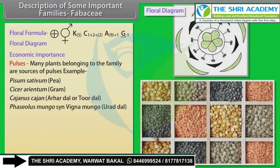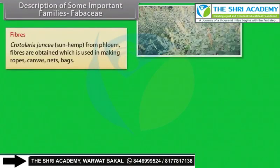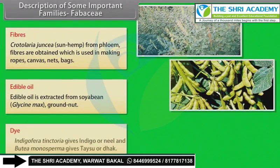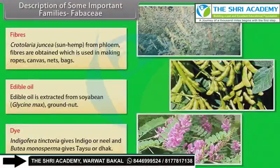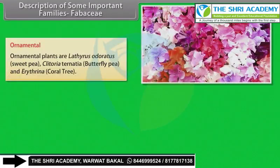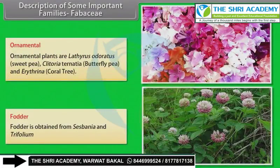Vigna sinensis (lobia), Phaseolus vulgaris (French or kidney bean / rajma), Lens esculenta (masoor dal), Lathyrus sativus (khesari dal). Fibers: Crotalaria juncea (sun hemp) — from phloem fibers used in making ropes, canvas, nets, bags. Edible oil: extracted from soybean (Glycine max) and groundnut. Dye: Indigofera tinctoria gives indigo, Butea monosperma gives tase or lac. Ornamentals: Lathyrus odoratus (sweet pea), Clitoria ternatea (butterfly pea), Erythrina (coral tree). Fodder: obtained from Sesbania and Trifolium.